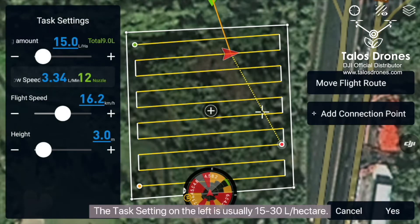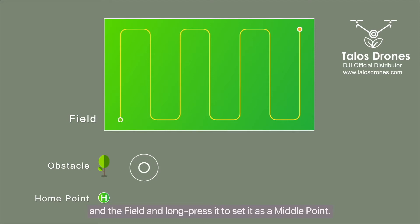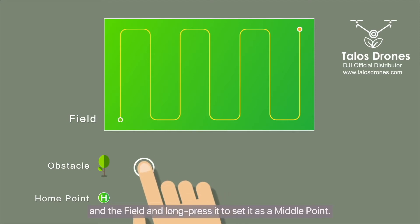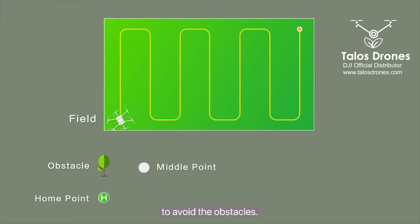The task setting on the left is usually 15 to 30 liters per hectare. Select a safe location between the takeoff and landing point in the field and long press it to set it as a middle point. Subsequent Agris drones following this route will fly to this location to avoid obstacles.